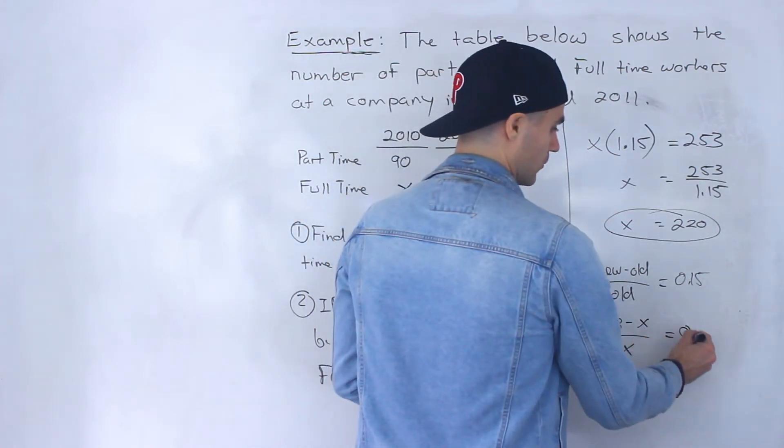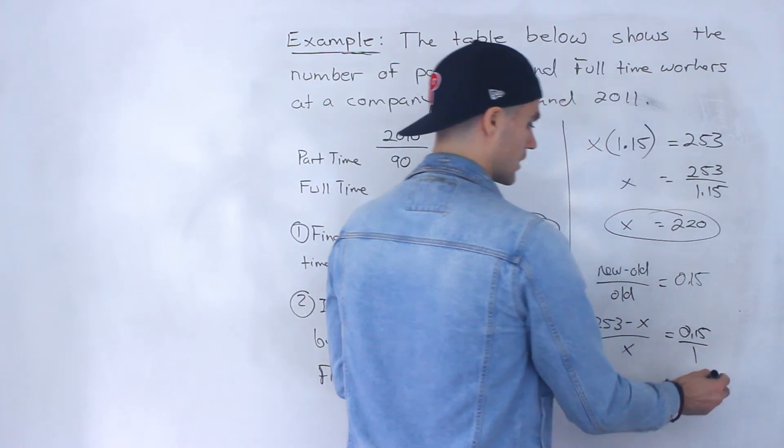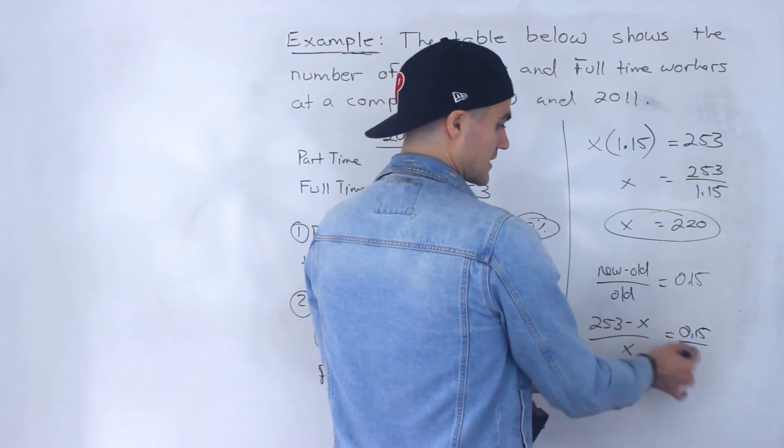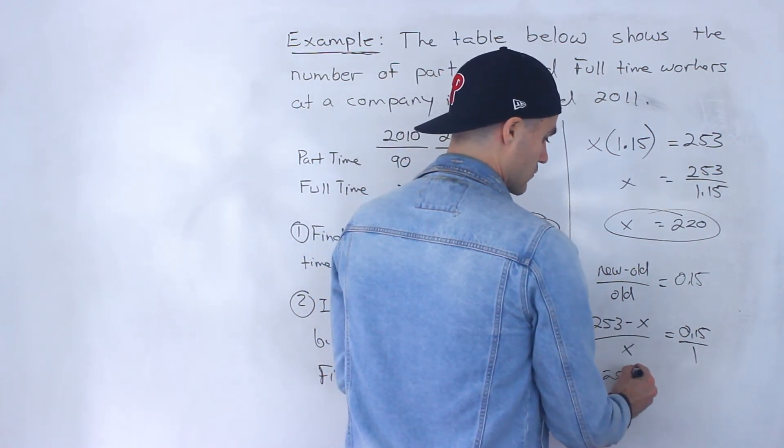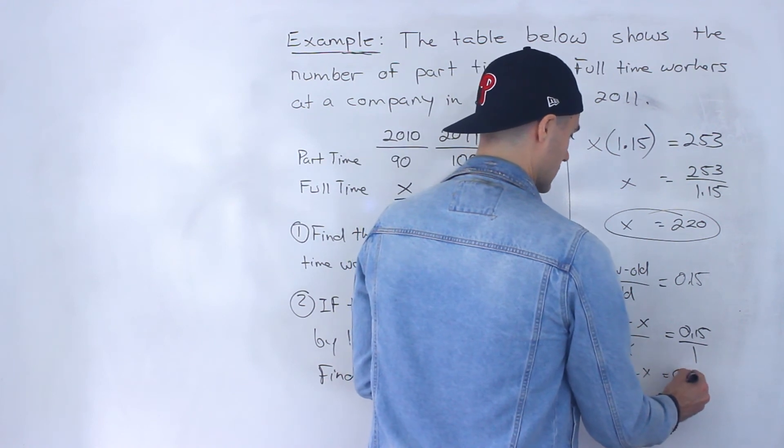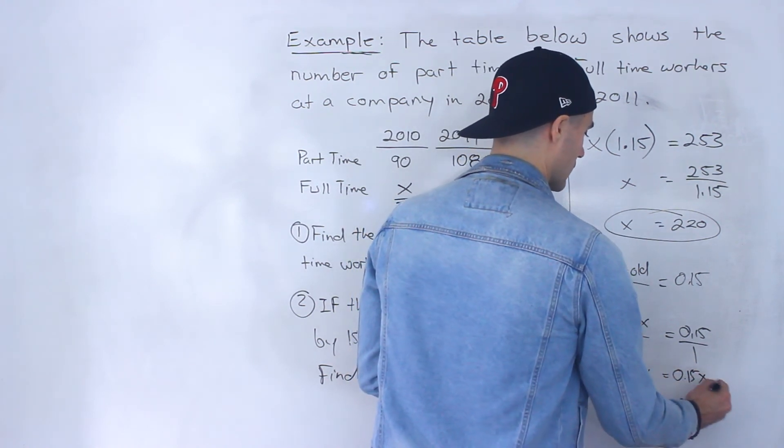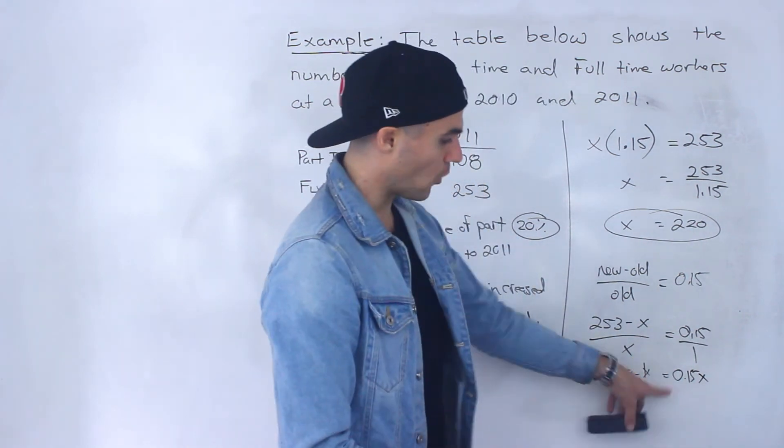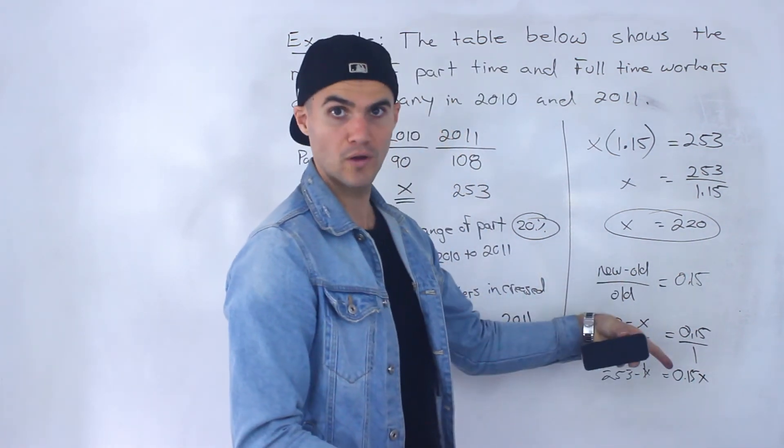253 minus x times 1 is just 253 minus x equals 0.15 times x gives us 0.15x. And then this is like a negative 1x here, so when you bring this over you would have 1x plus 0.15x, those are like terms and you'd end up with 1.15x which is over here equaling 253.